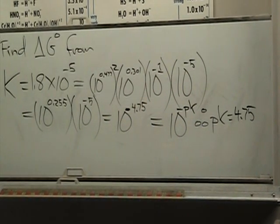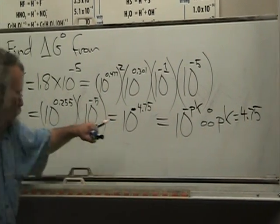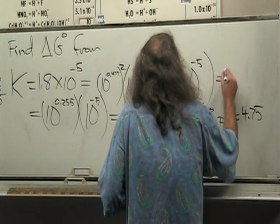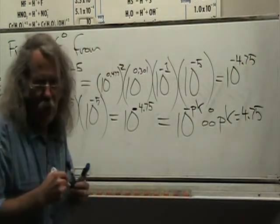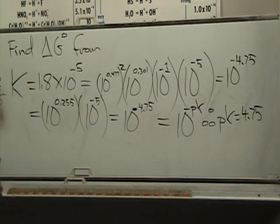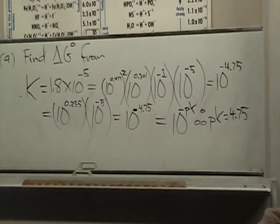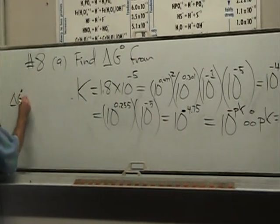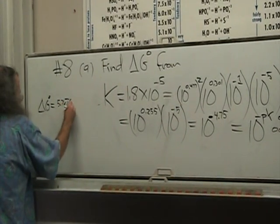Some of this could be omitted, and I would just have this equal to 10 to the minus 4.75 on the paper, because you don't have that much room. And then, the next part of the problem is delta G naught is equal to 5.7 kilojoules times pKa.